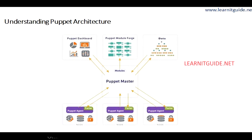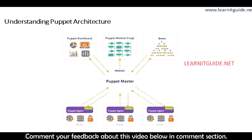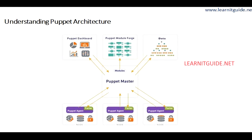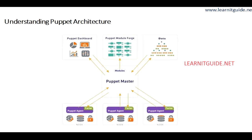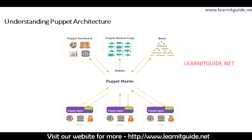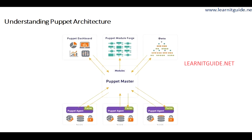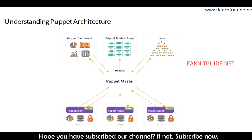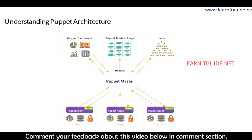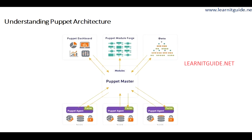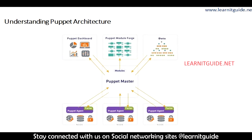Now the Puppet architecture. Like every management tool, we have a Puppet master which is a centralized server that has all the information to be managed. Inside the Puppet master you have a Puppet dashboard, Puppet model forge, and the data to be deployed at the client end. All the nodes are integrated with the Puppet master so that clients are managed by it. All the clients have a Puppet agent installed.